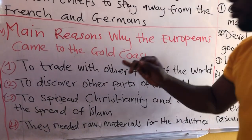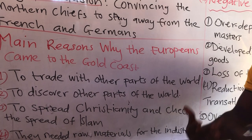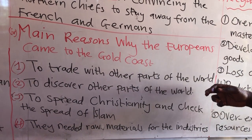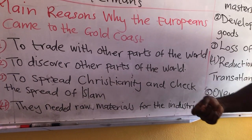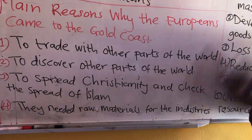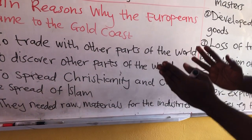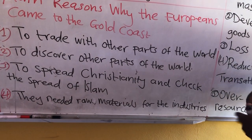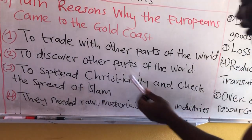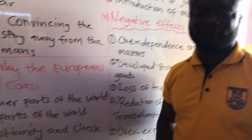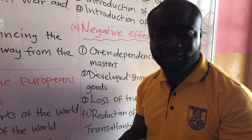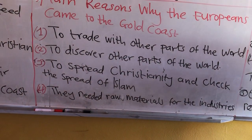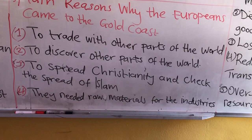Now, the main reasons why the Europeans came to the Gold Coast. Before the coming of the British, there were other European countries that came. First, to trade with other parts of the world. The Portuguese were the first to discover that there was another part of the world, and they were trying to come to the Gold Coast to trade with us — they had finished their feudal era and were entering industrialization. Second, to discover other parts of the world. The whites thought they were the only human creatures on this planet, and upon discovery they realized there were other peoples — Africans — also existing.